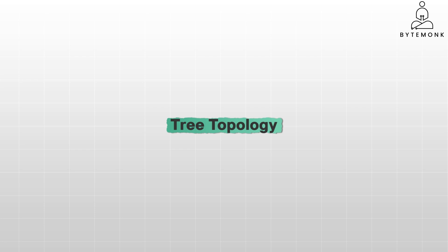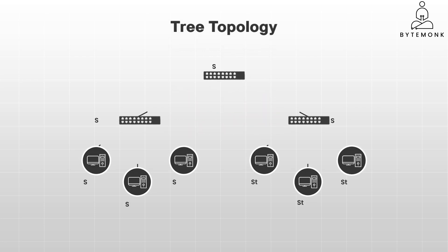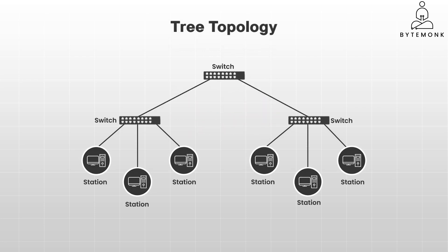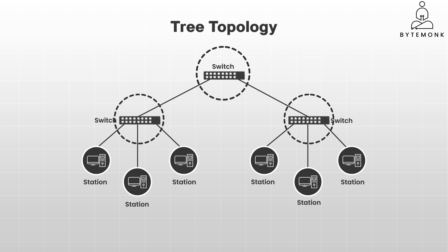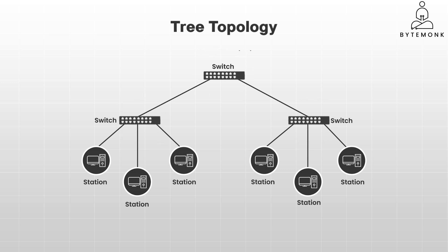Tree topology is a hybrid design that combines the best of both star and bus topologies. A central root node, often a powerful switch or router, acts as the trunk of the tree. From this root, multiple branches extend, each connecting to secondary hubs or switches. These secondary hubs in turn have their own branches connecting to individual devices or even other lower-level hubs. Data transmission in a tree topology follows a hierarchical path — a device sends data to its parent node, which forwards it up the tree until it reaches the root node, which then directs the data down the appropriate branch to the intended recipient.